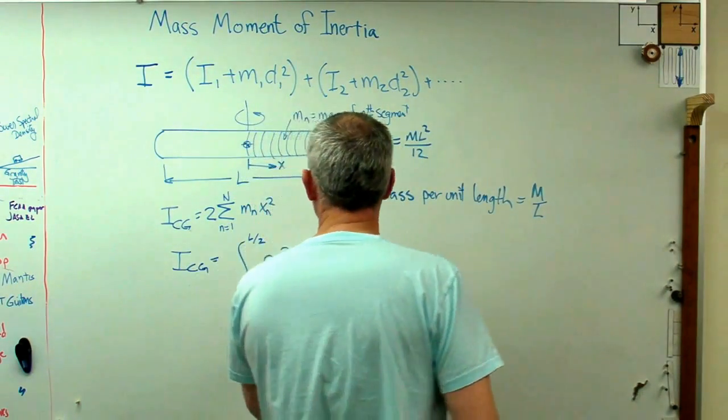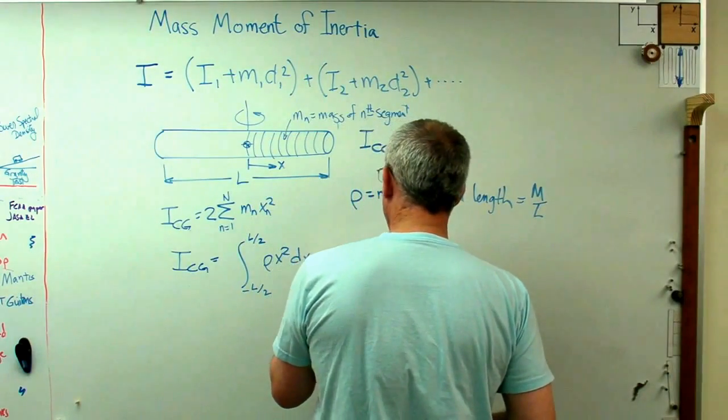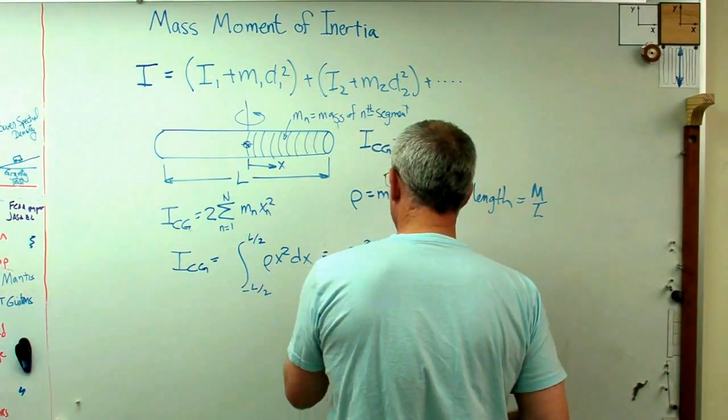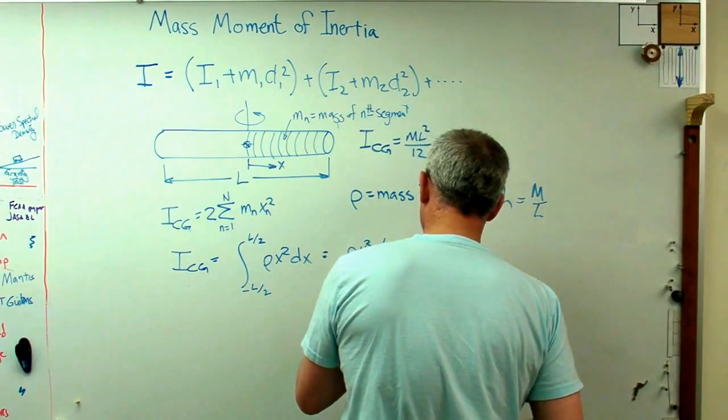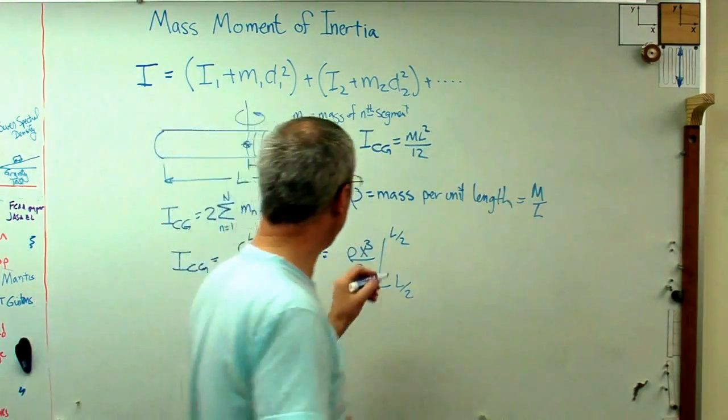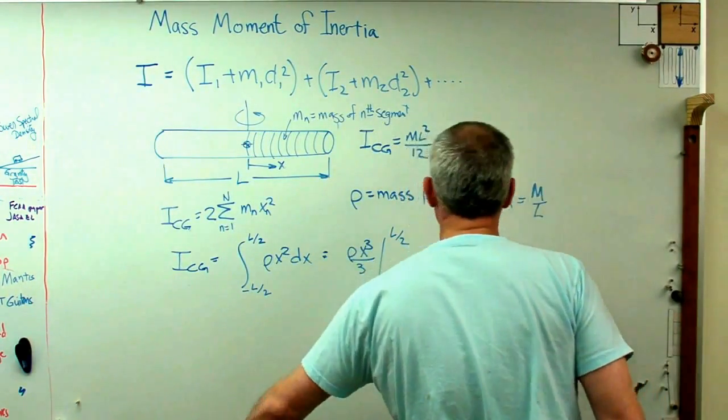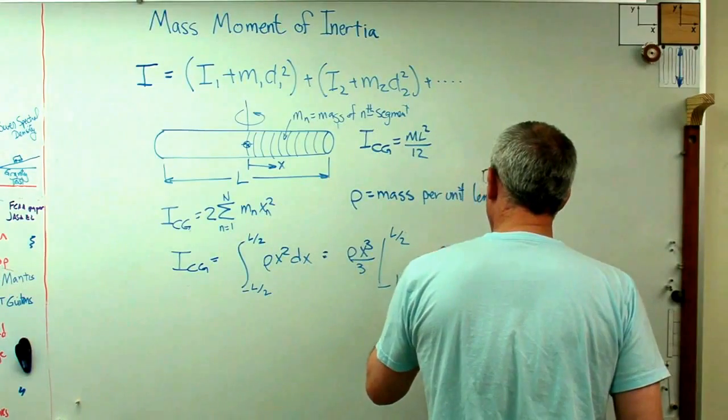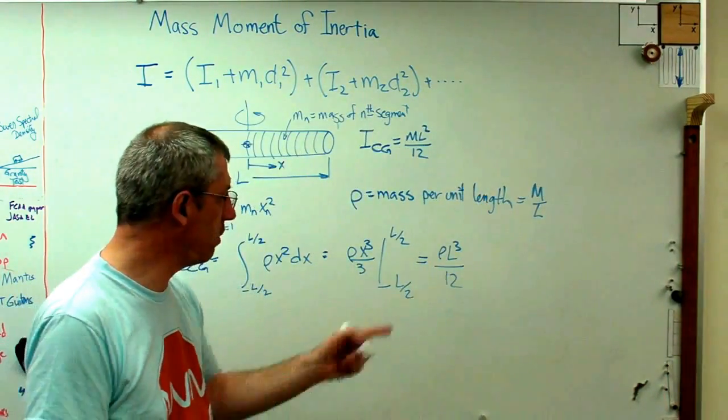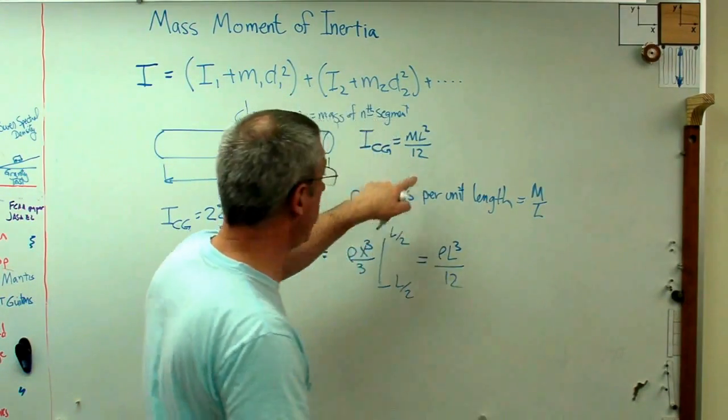All right, so far so good. Well, let's do this then. If I work this out, I'm going to get rho—let's see—x cubed over 3 from minus L over 2 to L over 2. All right, work that out. I'm going to get rho L cubed over 12.